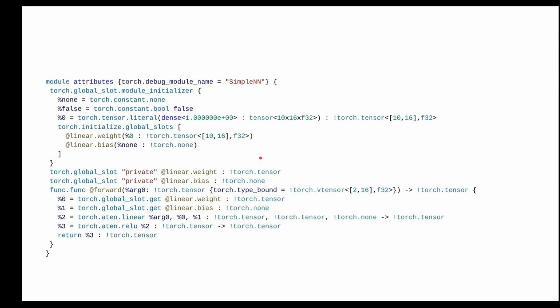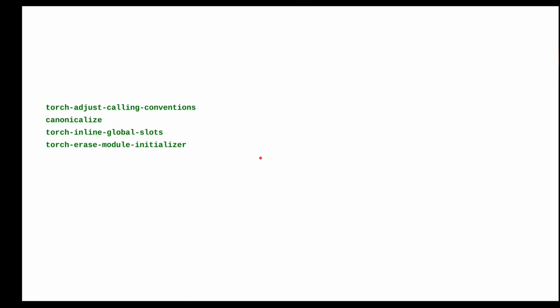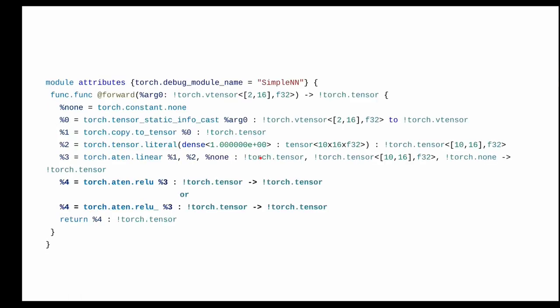The next step is to inline the global slots and erase the module once everything is inlined into the function. After these passes, you see just one forward method with all operations inlined — much easier to read and optimize. This is also where in-place semantics is handled.